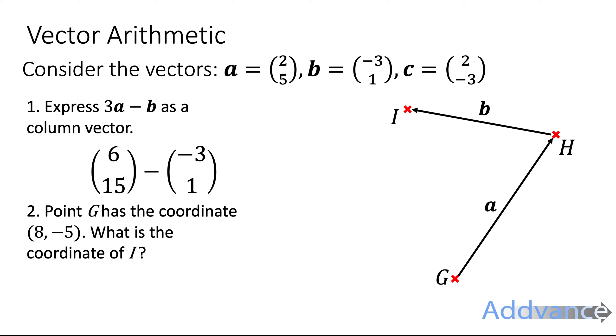So six minus minus three that's a double negative that makes it positive. Six minus minus three is nine. Fifteen minus one is fourteen. Okay so just be careful of your double negatives there. And that's the final answer.